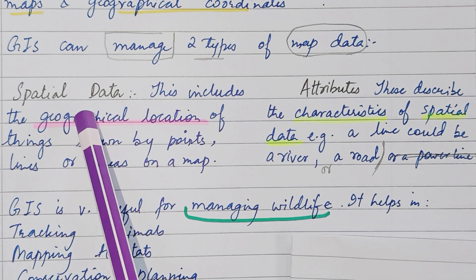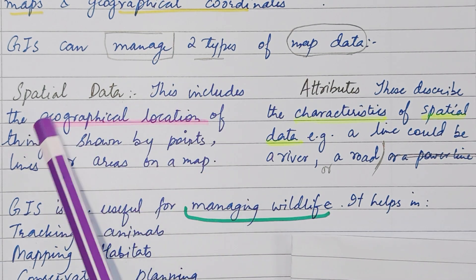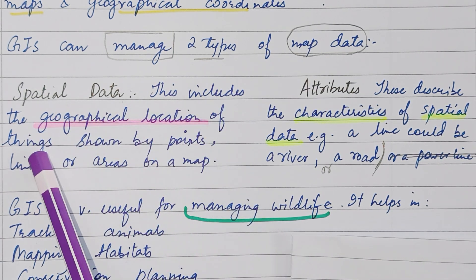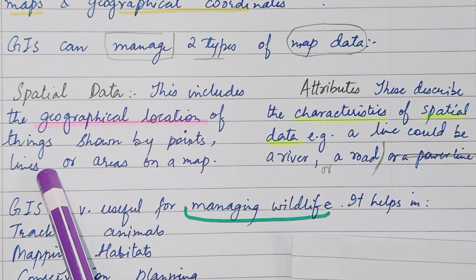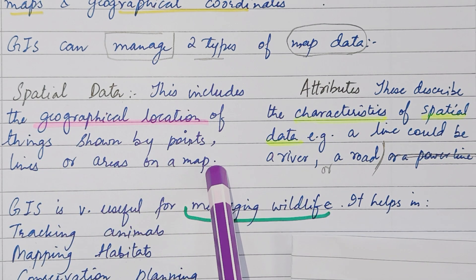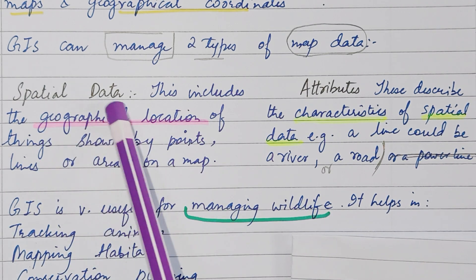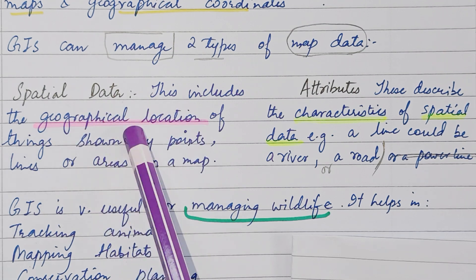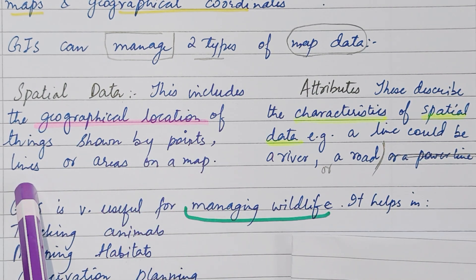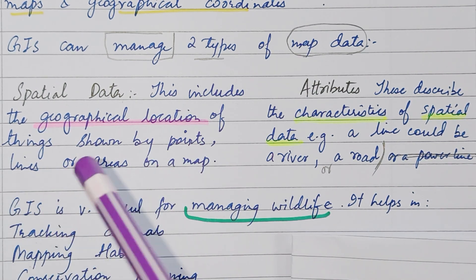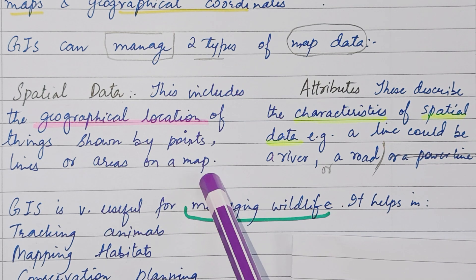Spatial data includes the geographical location of things, shown by points, lines, or areas on a map.